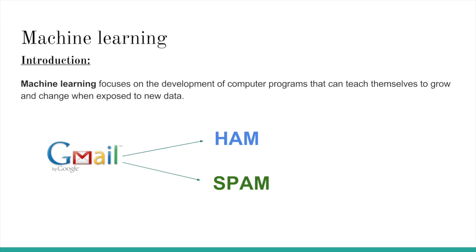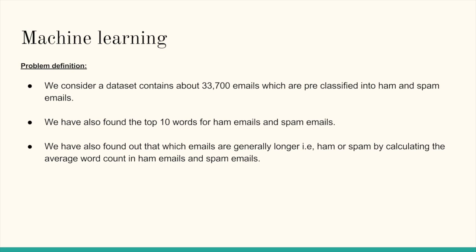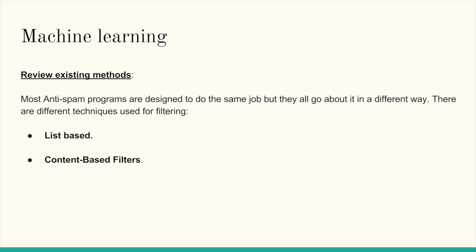For the problem definition, we consider a dataset containing about 33,700 emails which are pre-classified into ham and spam emails. We also found the top 10 words for ham emails and spam emails. We also found out which emails are generally longer — spam or ham — by calculating the average word count in ham and spam emails.